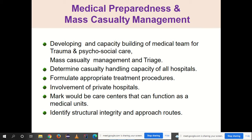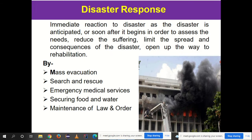Preparedness also includes involvement of private hospitals, marking would-be care centers that can function as medical units — centers that may not function normally but can serve for a particular injury or disease. For example, early in COVID-19, many hospitals were not equipped for treatment, so identifying potential care centers was essential. This involves identifying structural integrity and approach routes. All this comes under medical preparedness and mass casualty management.